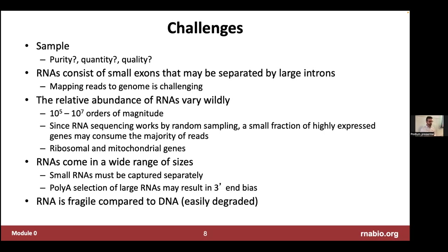Another challenge is the nature of the molecules we're sequencing. The RNAs consist of small exons that before splicing were separated by large introns. We're sequencing the mature mRNA where exons are spliced together, but we usually align those sequences back against a reference genome where you have exons and introns — that creates a mapping challenge, making it a much harder alignment algorithm problem than DNA sequencing. Another thing quite different from DNA analysis is that the relative abundance of RNAs varies widely, which is one reason bulk RNA-seq on Illumina remains so popular — you can overcome that problem for a relatively low cost.